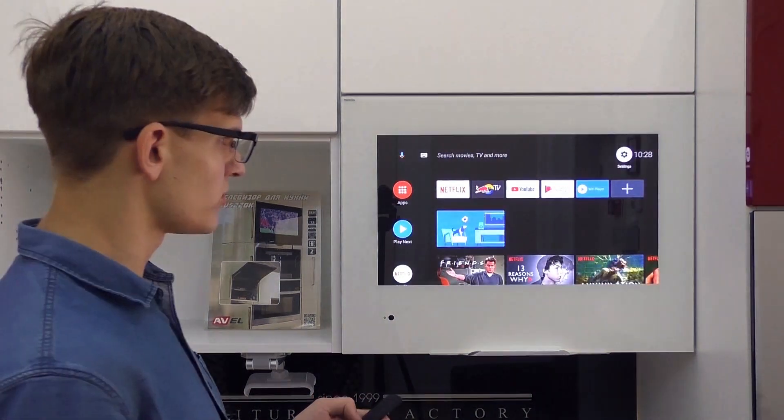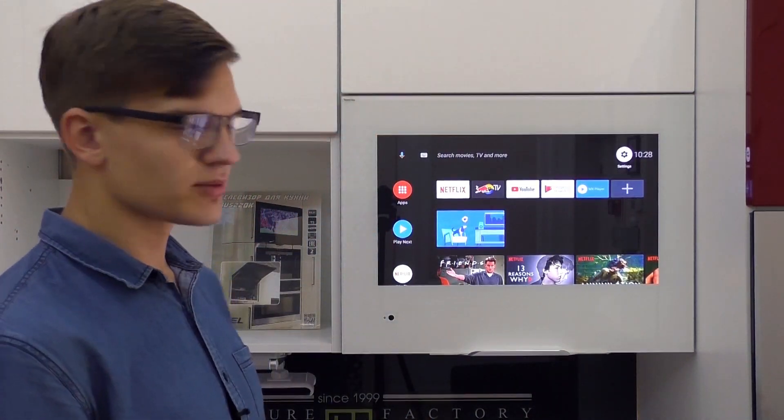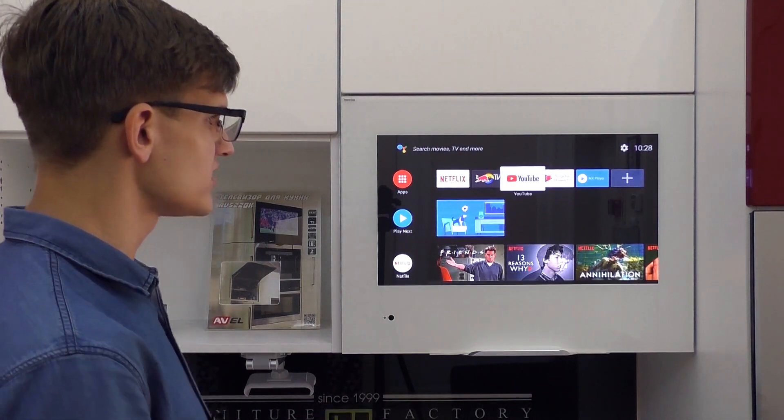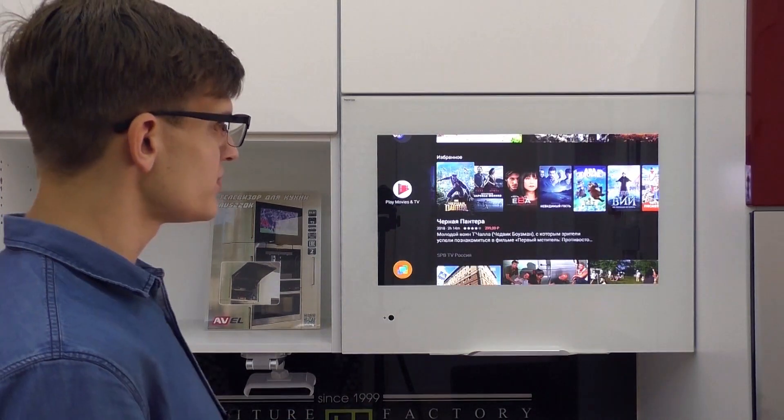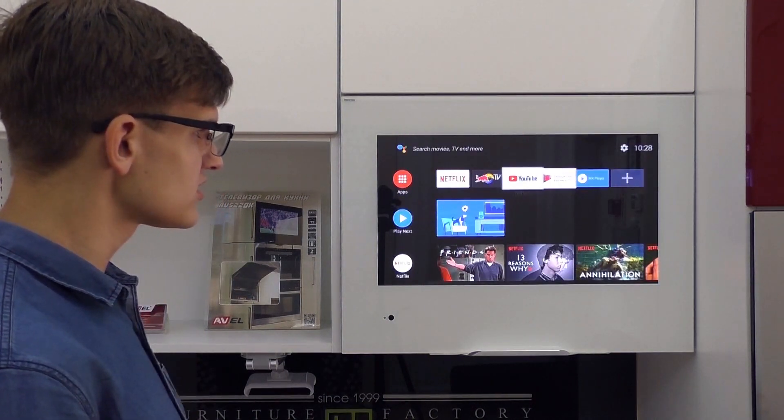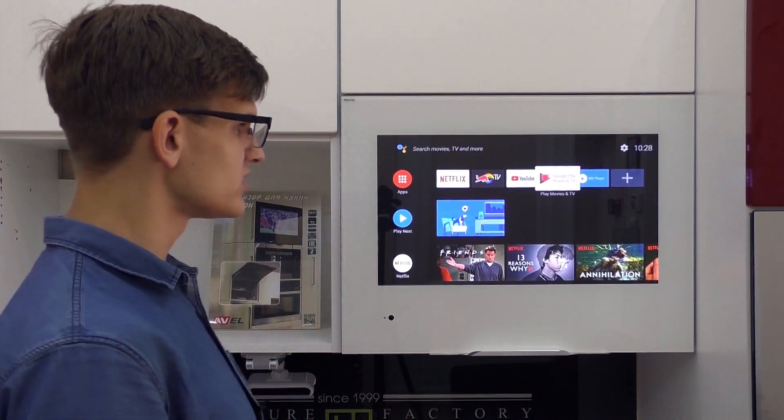So to turn off both devices, Android set-top box and our TV, we just press the power off button on the Android box remote. So there's no need to take the second TV remote each time.